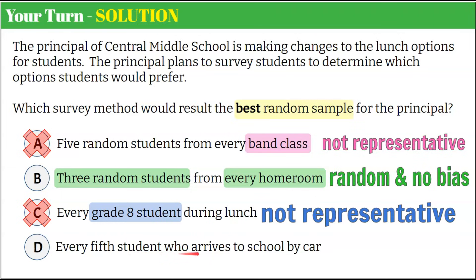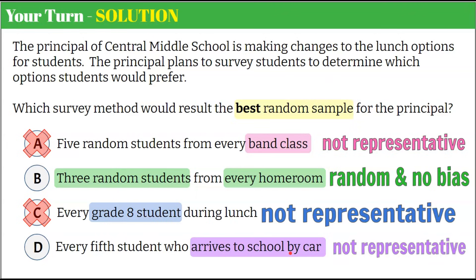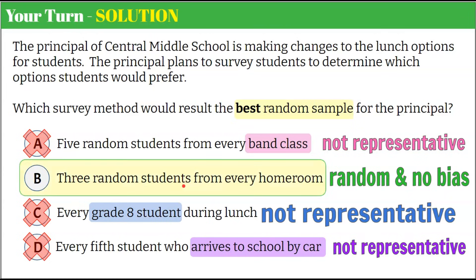Option D is every fifth student who arrives by car. That's not representative of the whole school because many students ride a school bus. Option B is three random students from every homeroom. It's random, and every student has to go to homeroom, so there's no bias. This covers all grades and all students regardless of how they got to school or their interests. The answer is B: three random students from every homeroom.